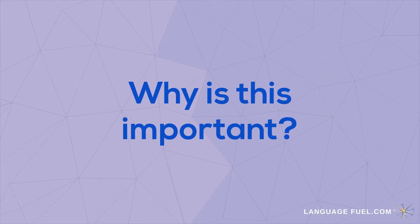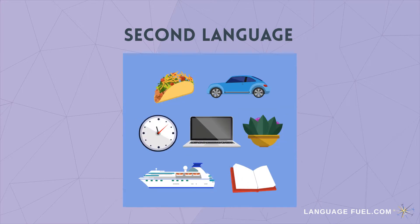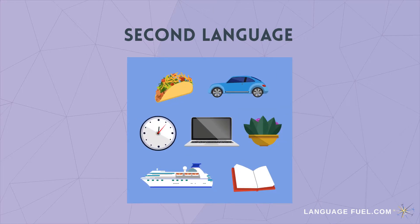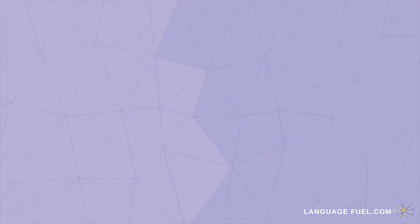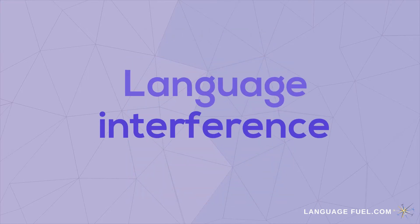Why is this important? It's easy to assume that the language we are learning will function much the same way as our first language, and this can lead to what is called language interference. Here are a couple of examples.